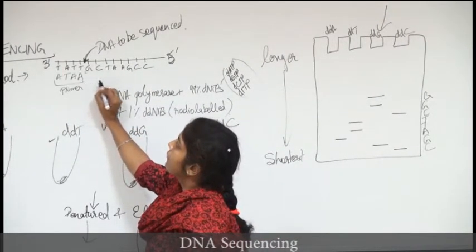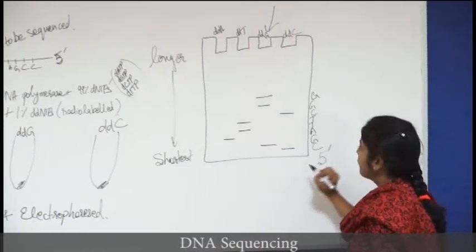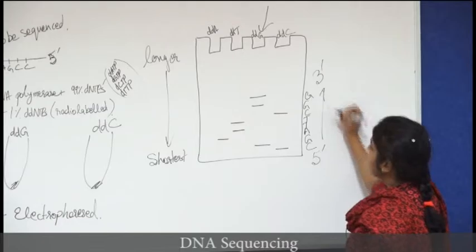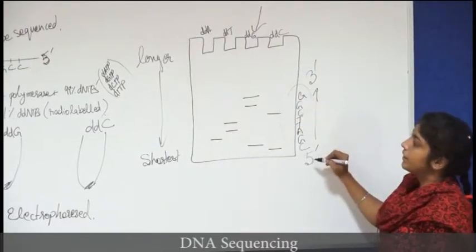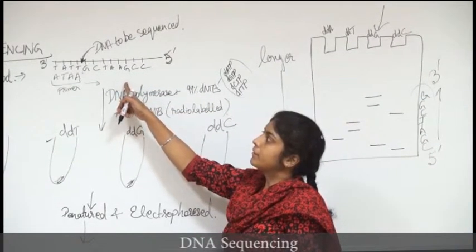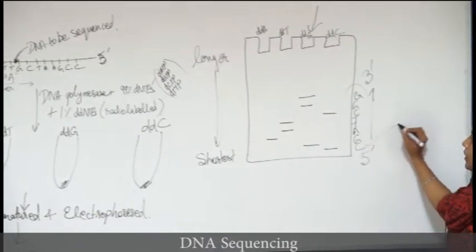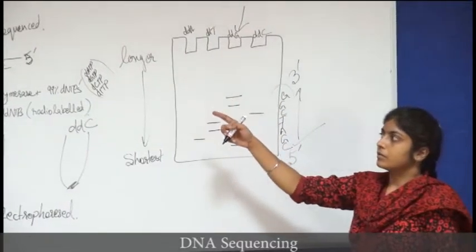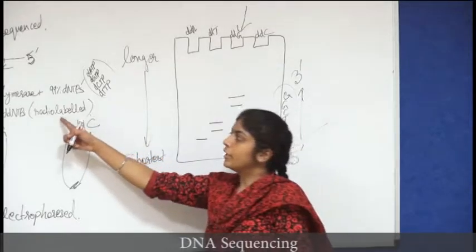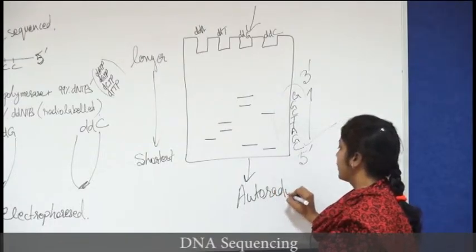Synthesis always takes place in the 5 prime to 3 prime direction, so the shortest fragment represents the 5 prime end of the newly synthesized DNA. The sequence obtained after electrophoresis is the sequence of the DNA complementary to the original DNA to be sequenced. After getting this sequence we can identify the sequence of the original DNA, and because we use radiolabeling, the results are generally observed by autoradiography.